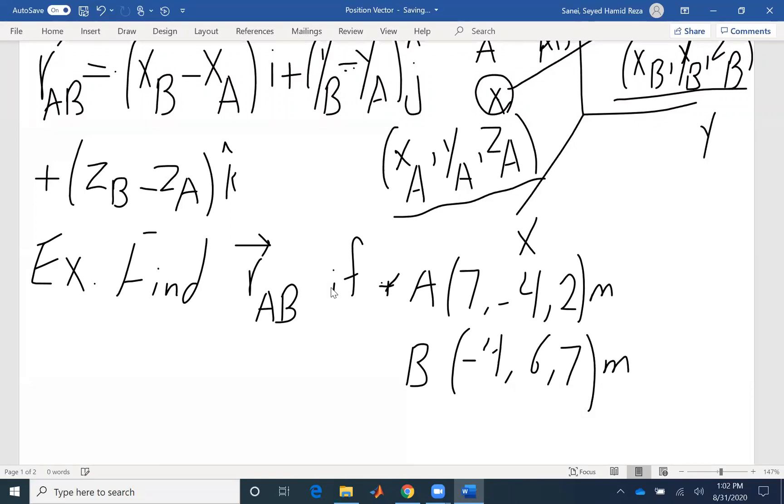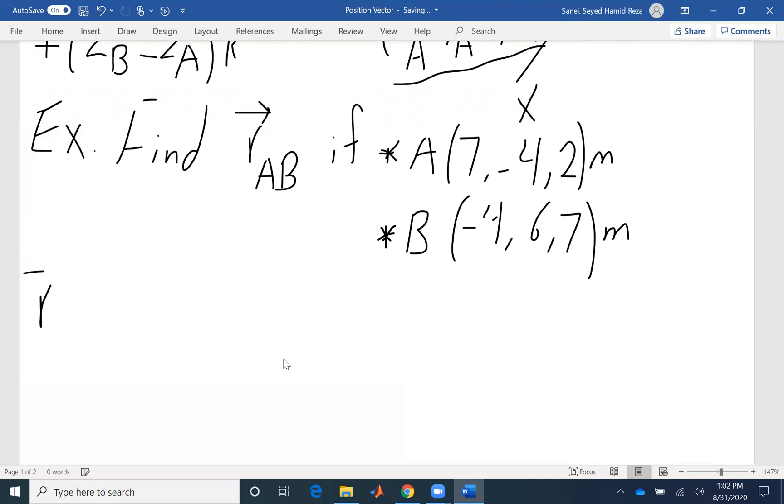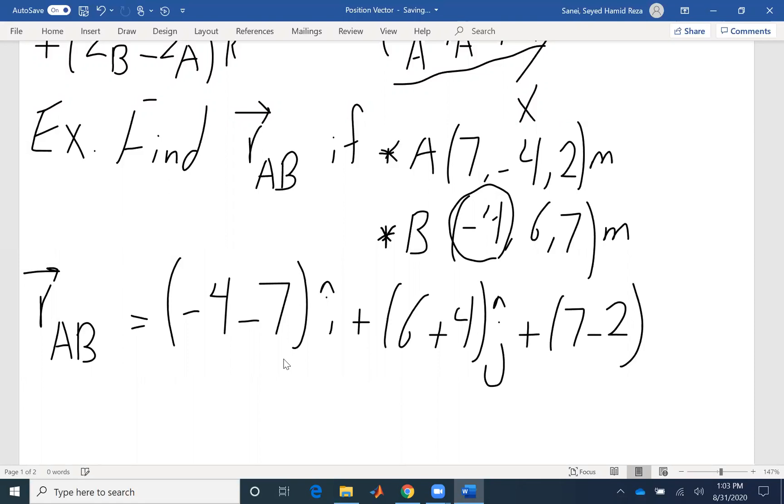So we have two points, A and B. We're going to find the position vector between the two. The position vector is the coordinate of B minus the coordinate of A. So RAB would be simply -4 minus 7 i, plus 6 minus negative 4, so that would be plus 10 j, plus 7 minus 2 k. So that is simply -11i plus 10j plus 5k, and that would be our position vector.